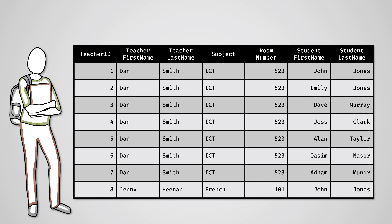The problem with this is now the data of Dan Smith is repeated seven times, one for each student. Also, if you look at rows one and eight, the student John Jones appears twice as he is taking ICT and French.